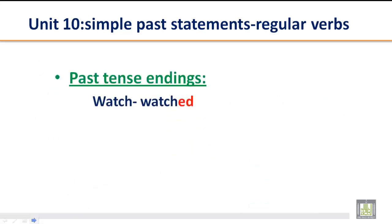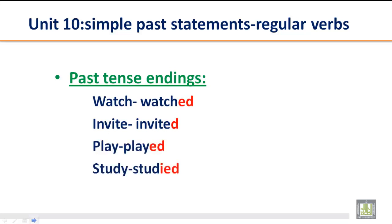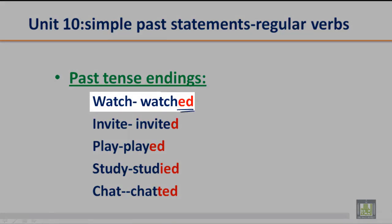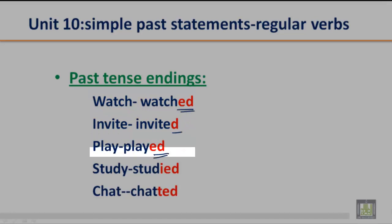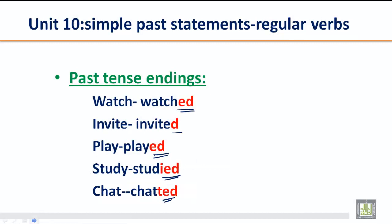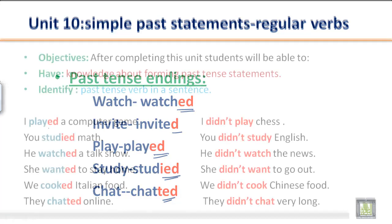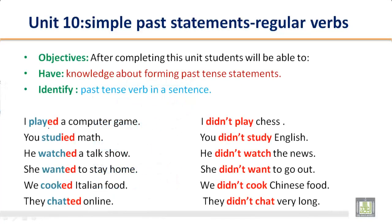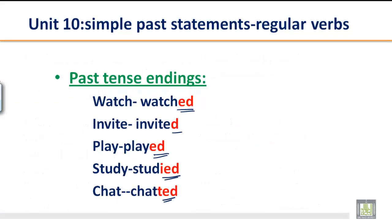Now let's look at the past tense endings we just practiced. Simple present changes to simple past: 'watch' → 'watched,' 'invite' → 'invited,' 'play' → 'played,' 'study' → 'studied,' 'chat' → 'chatted.' That's all for today. I hope you have an idea of how to make simple past verbs and can recognize whether a verb is simple past or simple present. Hope you enjoyed your lesson — see you in the next class!